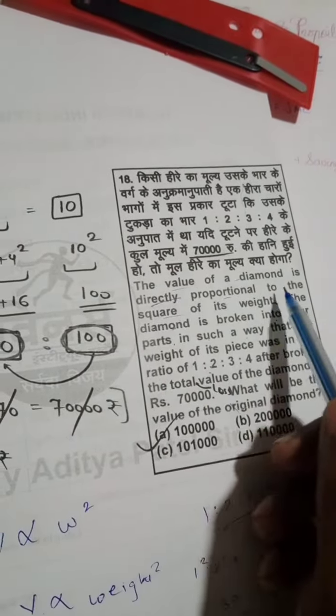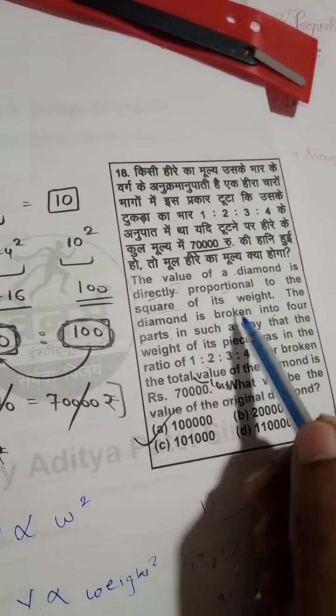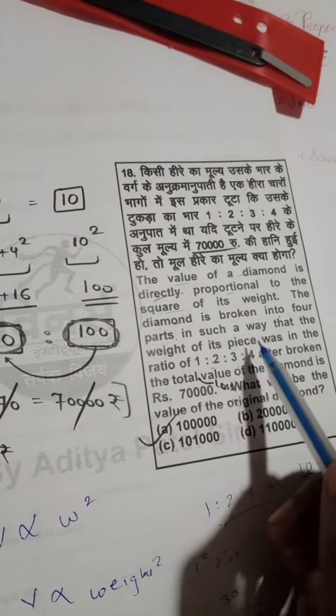The value of a diamond is directly proportional to the square of its weight. The diamond is broken into four parts in such a way that the weight of its pieces was in the ratio of